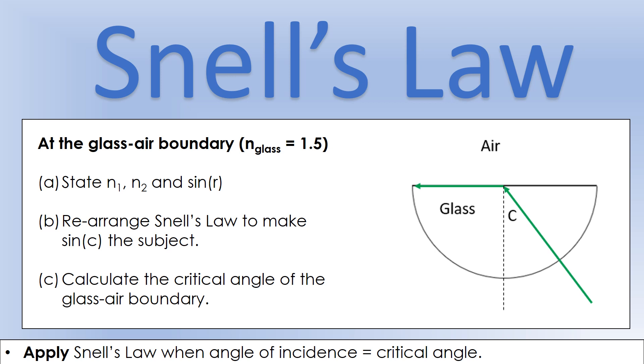We've got glass with refractive index 1.5, and we're looking at the boundary going from glass to air. Remember that the process of total internal reflection can only happen if you're going from a high refractive index to a low refractive index. Pause the video now and have a go at these questions.